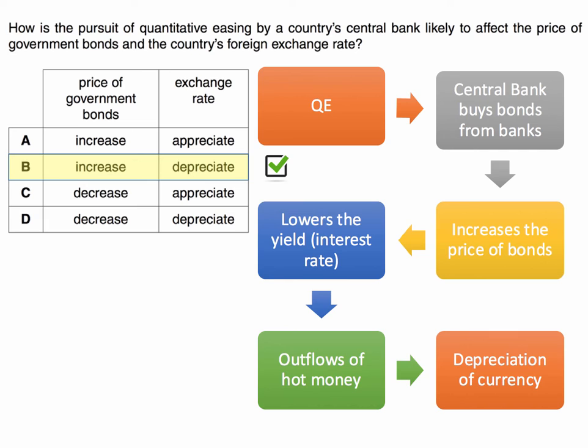If the price of bonds goes up, there's an inverse relationship between the market price of the bond and the yield, or the interest rate on a bond. So increased bond prices will generally cause a fall in long-term interest rates in the economy.